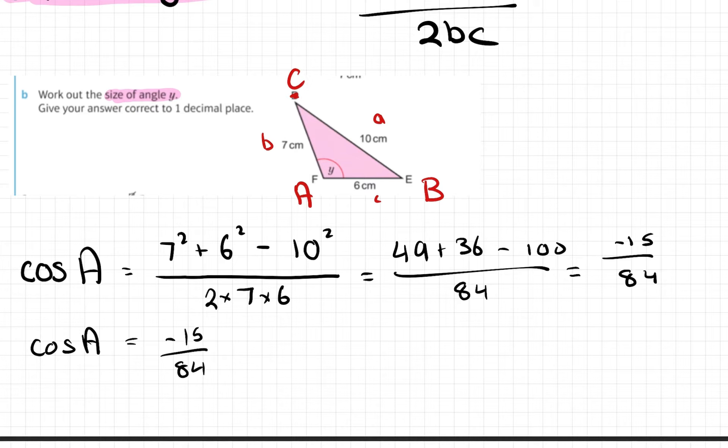That simplifies down to negative 5 over 28. So the missing angle, angle A equals cos to the minus 1 of negative 15 divided by 84.